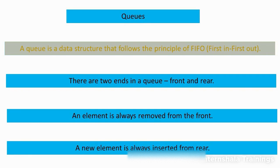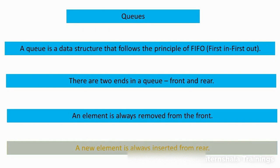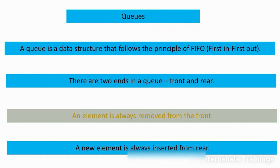But in case of queues, the situation is different. The principle of FIFO is applied — first in, first out. In queues, there are two ends rather than one, called front and rear. Whenever you want to insert a new element in a queue, it will be inserted only from the rear. And whenever you want to remove an element, it will be removed from the front.